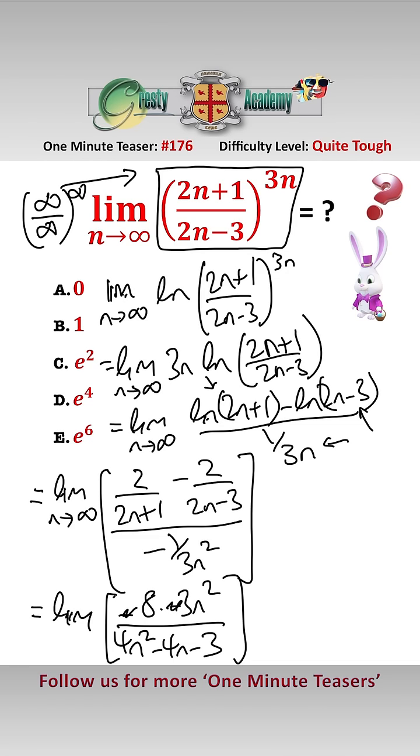that gives us the limit as n approaches infinity of 24 over 4 minus 4 over n minus 3 over n squared. They go towards 0, which just leaves us with 24 over 4, which is 6.